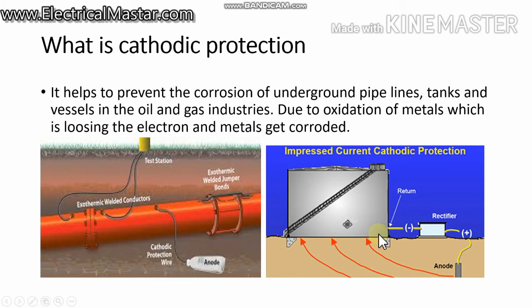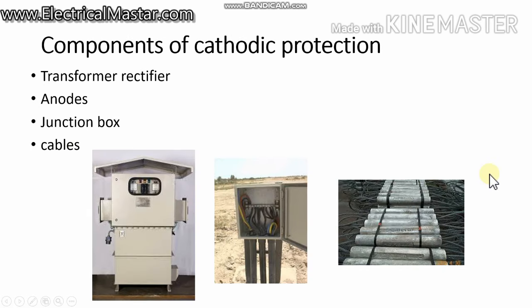Before we see how cathodic protection works, we need to understand what components are involved. You can see in this picture there is a rectifier unit, an anode system, and some cables. The major components are: transformer, rectifier, anode, junction box, and cable.